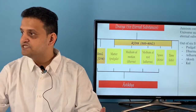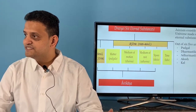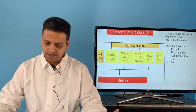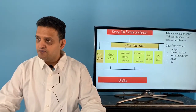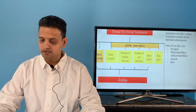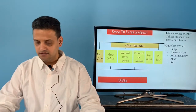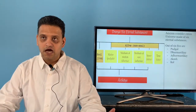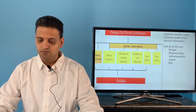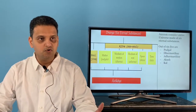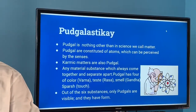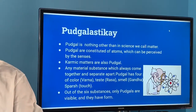The universe is made of six eternal substances, and out of these six substances, five are Pudgal, Dharmashtikai, Adharmashtikai, Akas, and Kal. We will talk about these five in more detail.